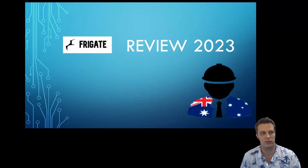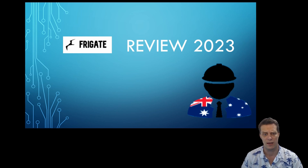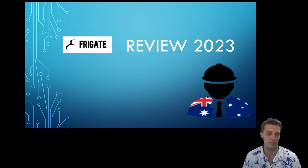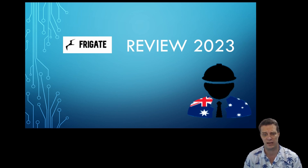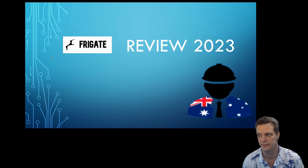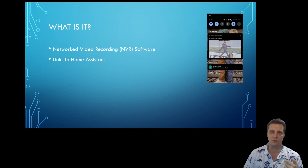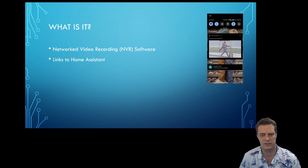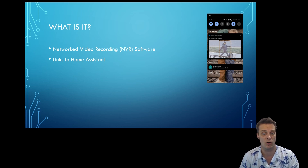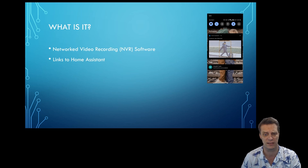G'day guys. Today I want to take you through a quick review of the Frigate NVR software. This is the software that I currently use to detect when people come to my front door and to trigger different Home Assistant things, but also it can be used for recording and is very good at that. It is network video recording software which was designed specifically with links to Home Assistant in mind, and it has some really excellent links to Home Assistant.